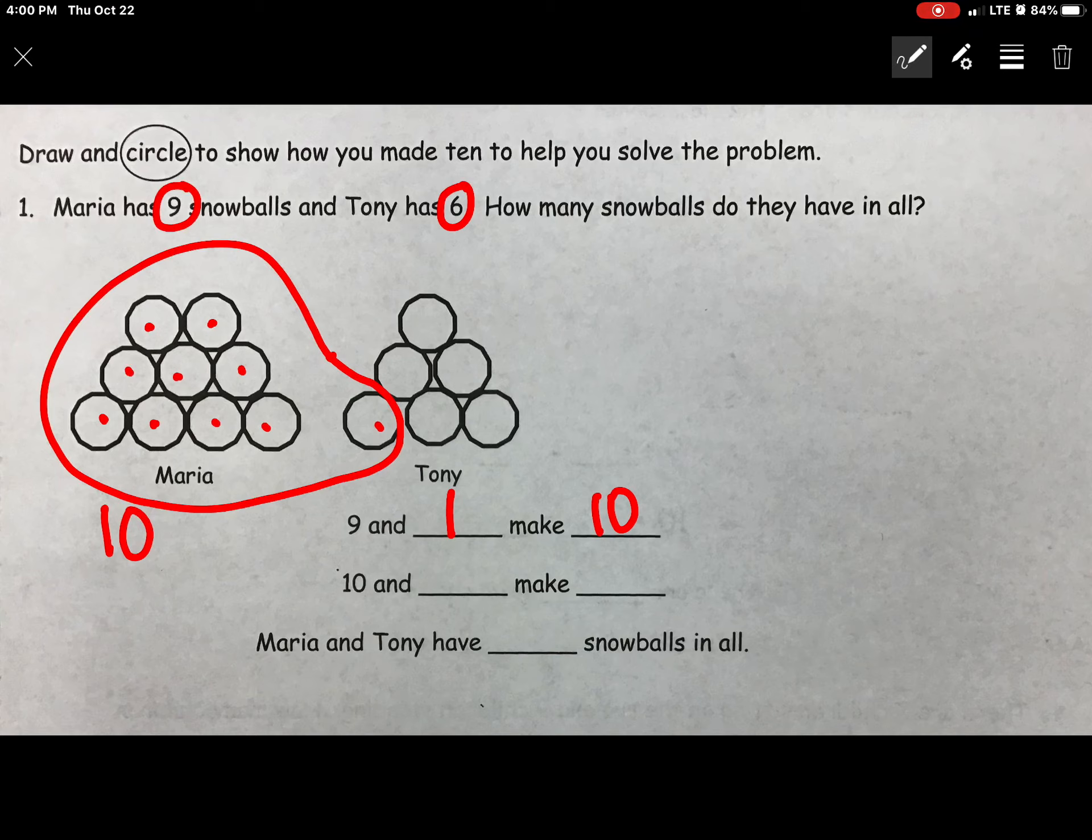Down here we're going to write our thinking: 9 and 1 make 10. Now we look at what we did not include in our circle group and we count those out. 1, 2, 3, 4, 5 and I also want to label that as well. So down at the bottom it says 10 and our second group is 5 make 15. Maria and Tony have 15 snowballs in all.